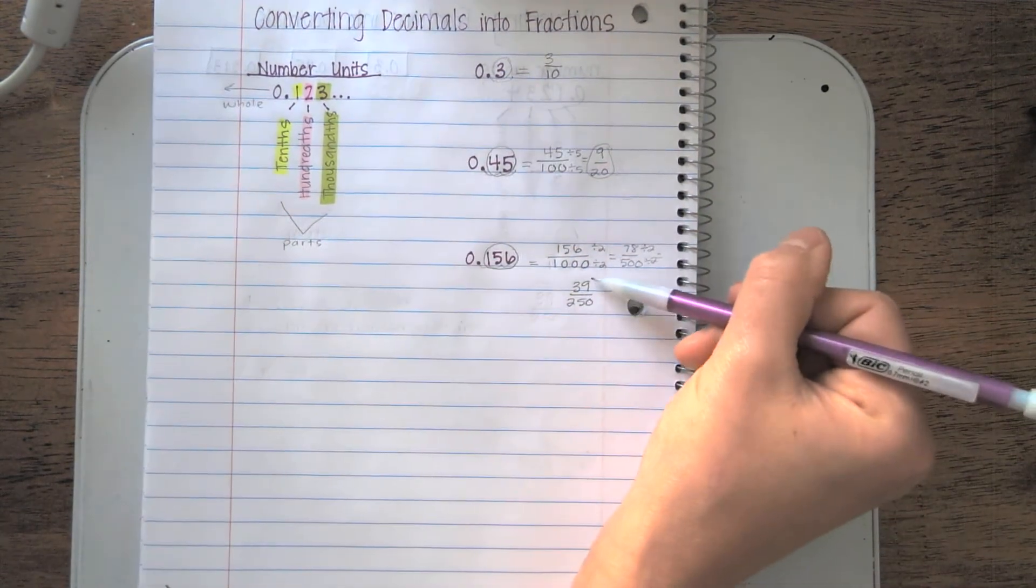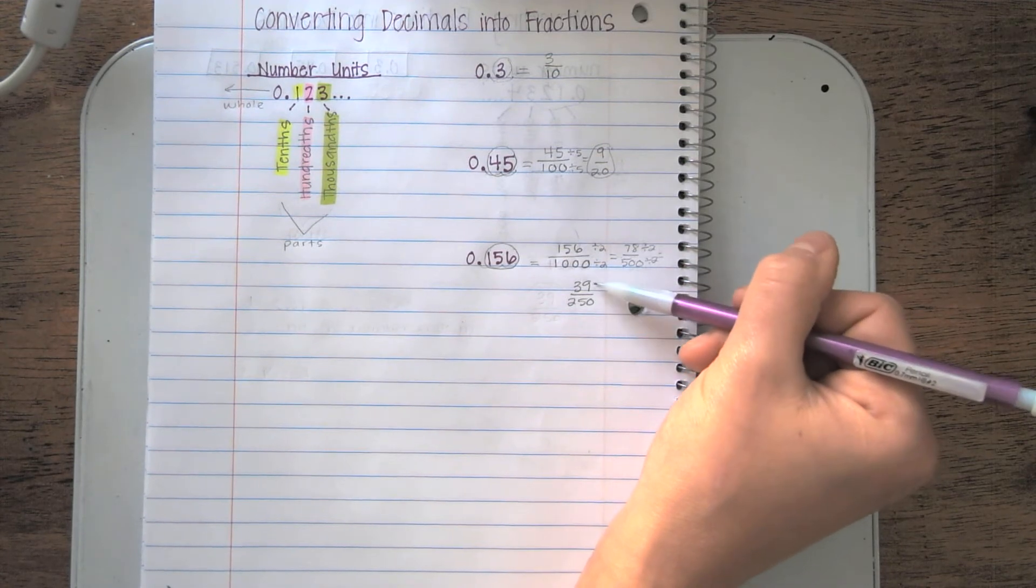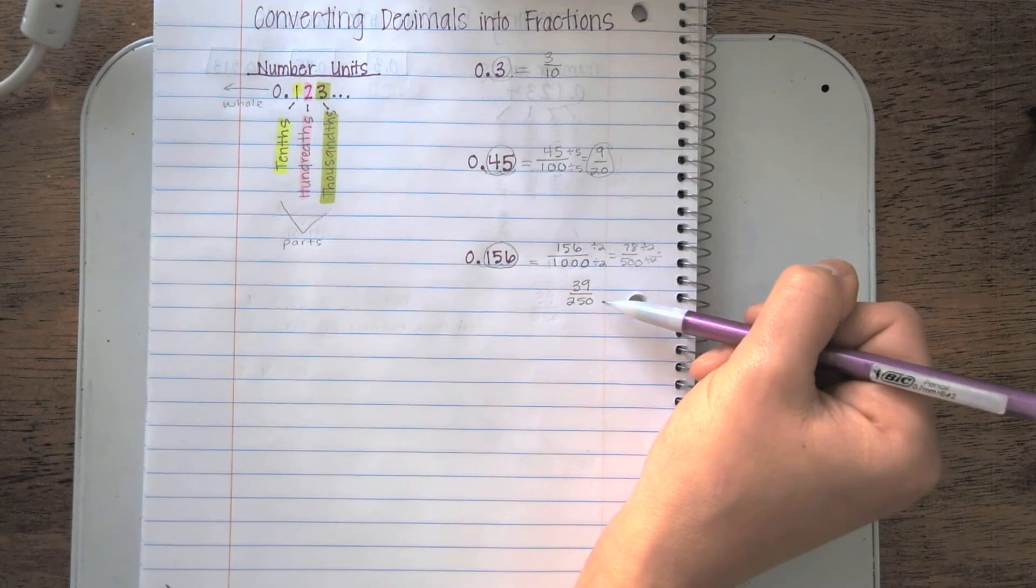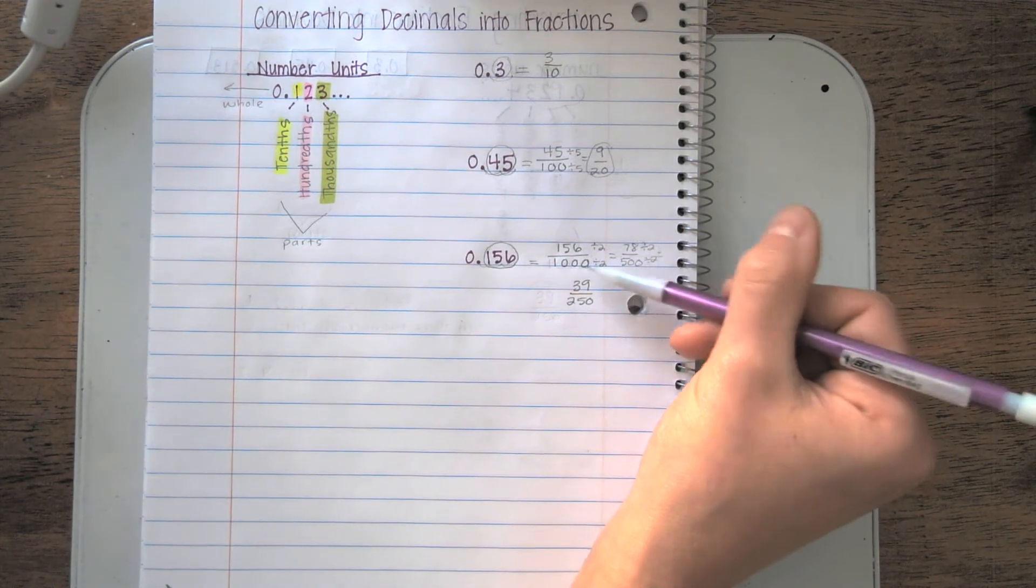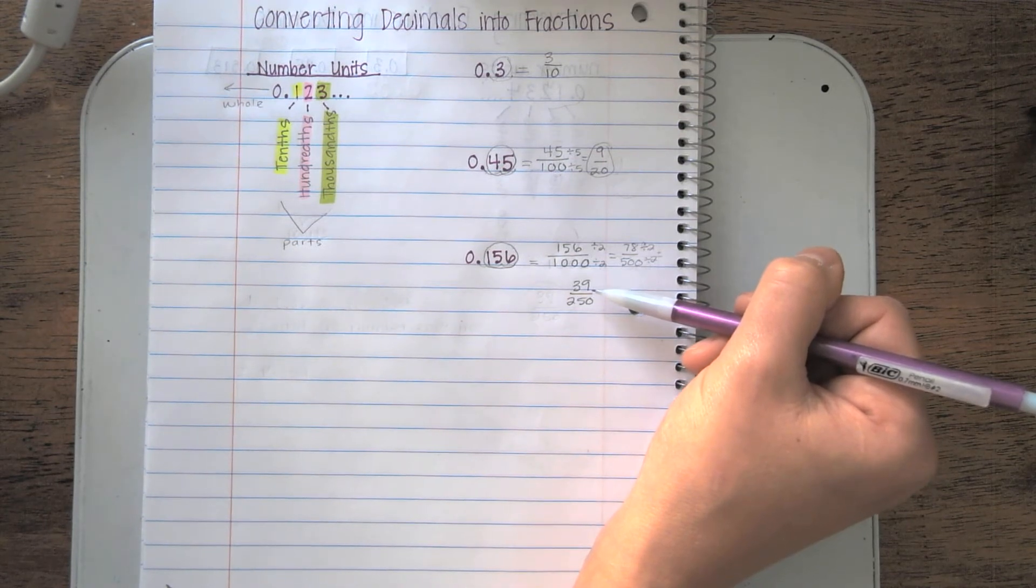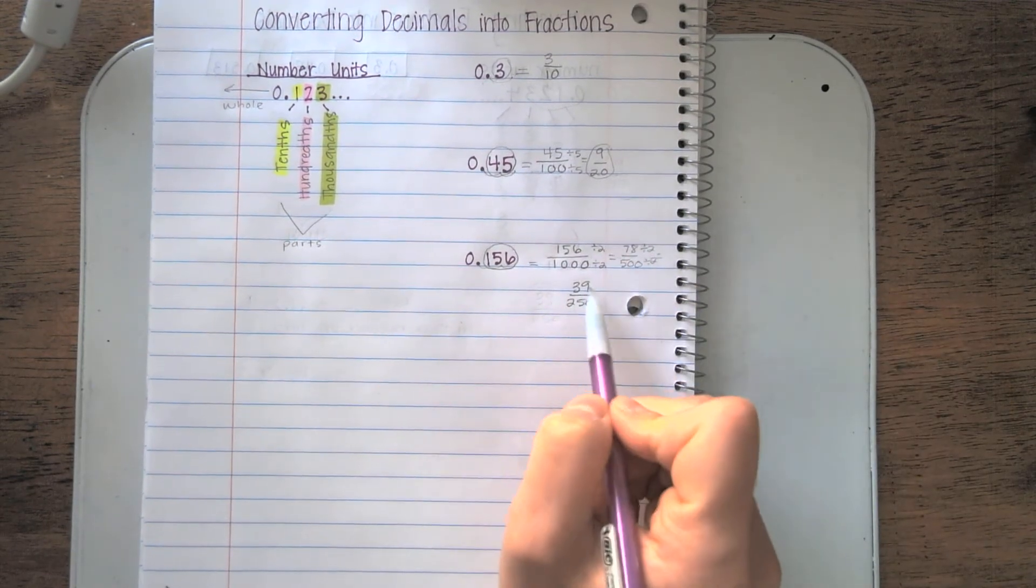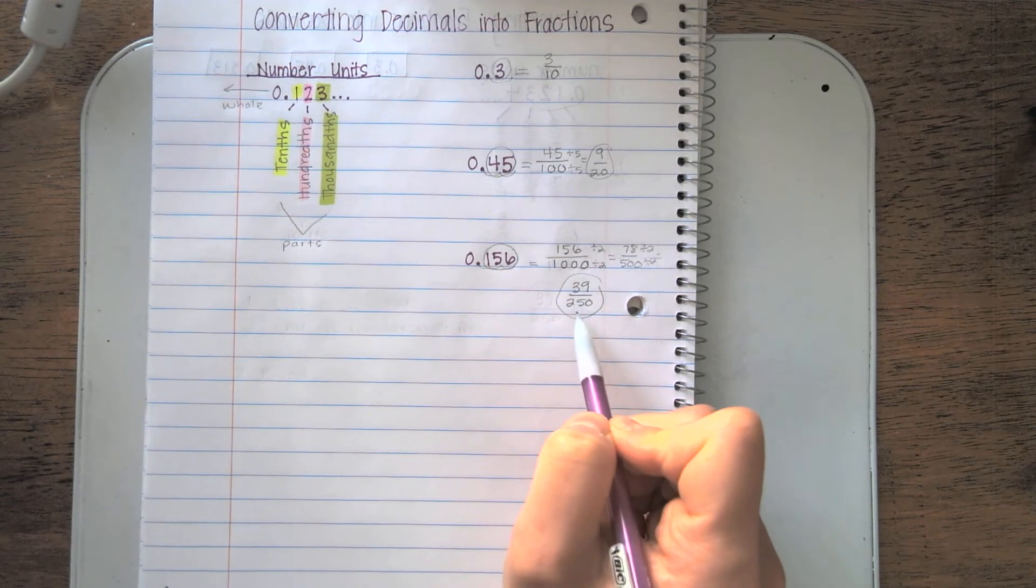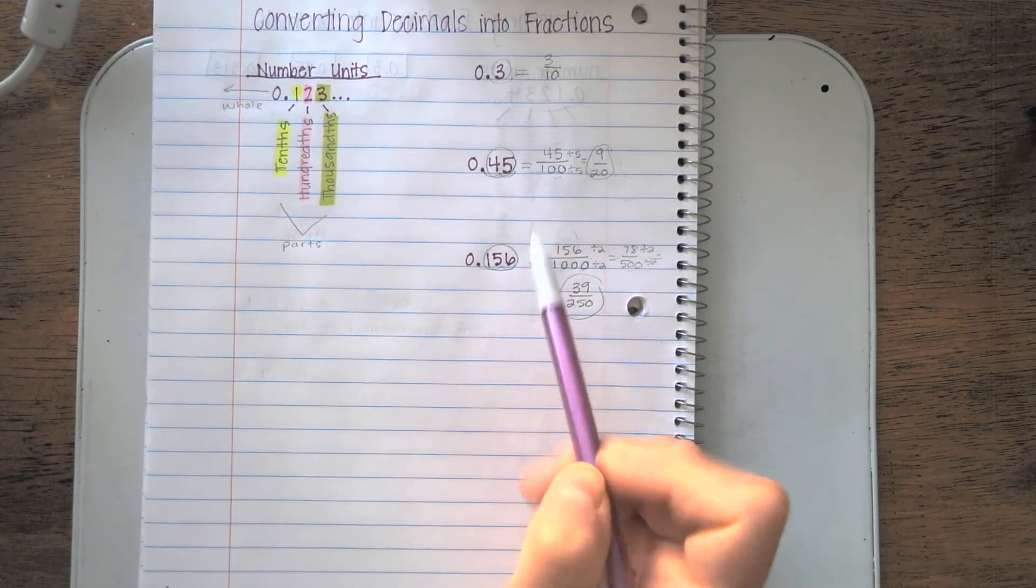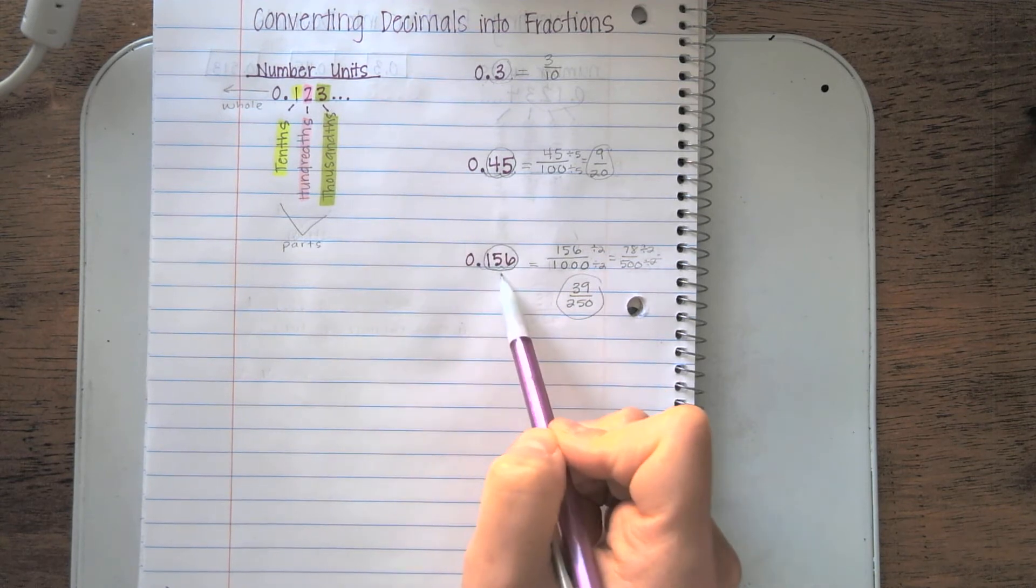Now, when I'm looking at my fraction, I know that both numbers, numerator and denominator, are not even. So I cannot divide by 2. And I know that 39 is a prime number. That means there is nowhere else I can go with this one. So 39/250 is the same as 0.156 in decimal format.